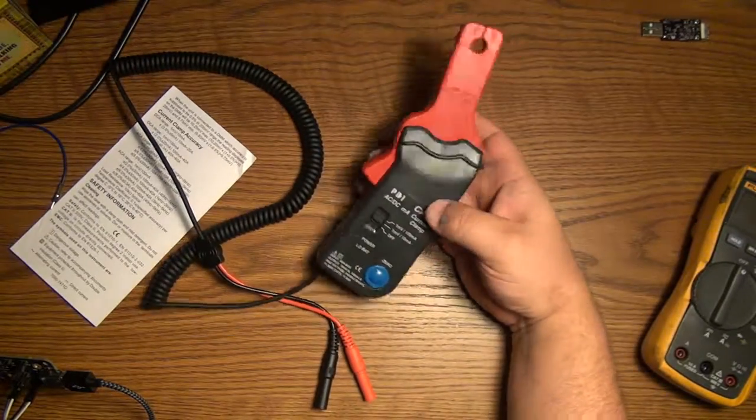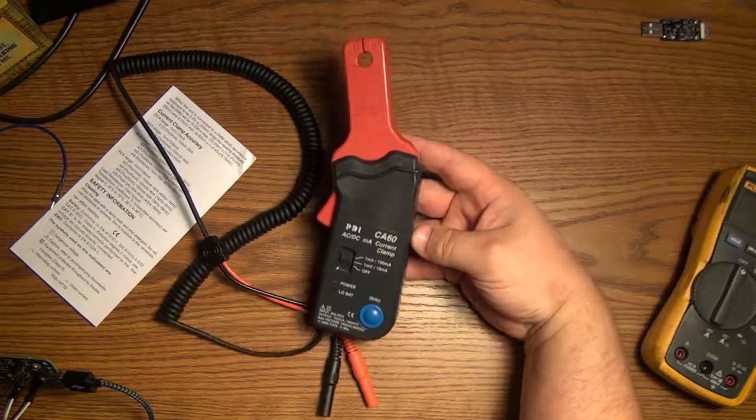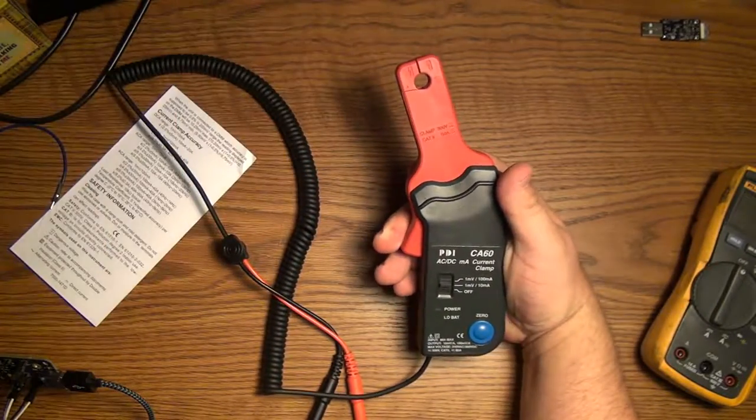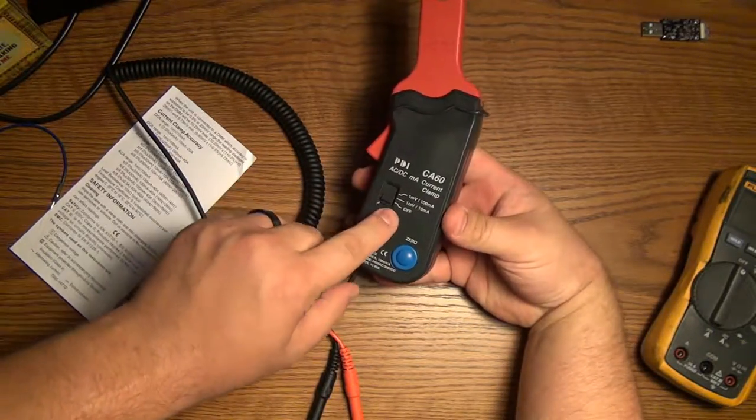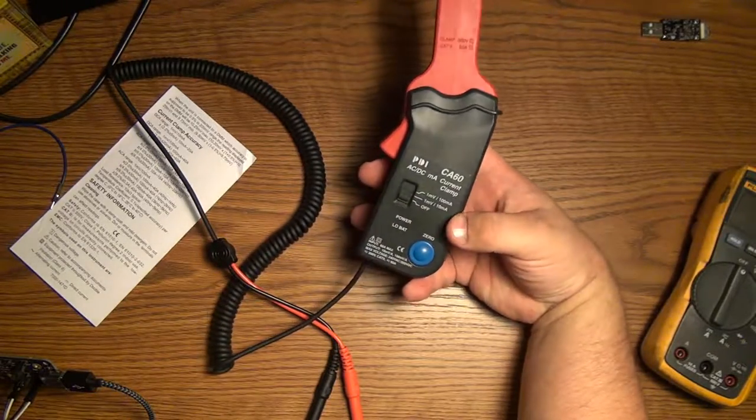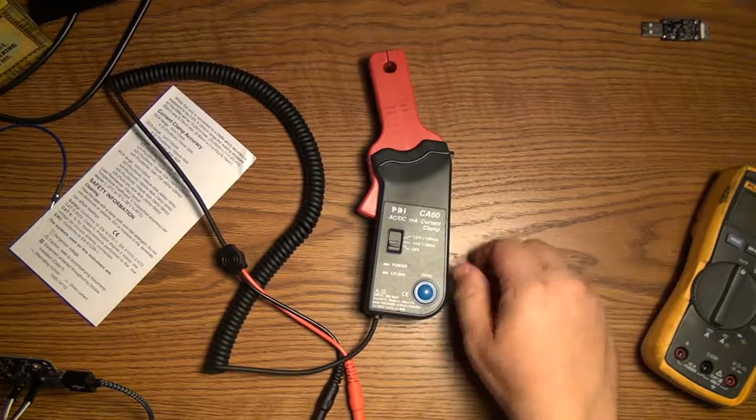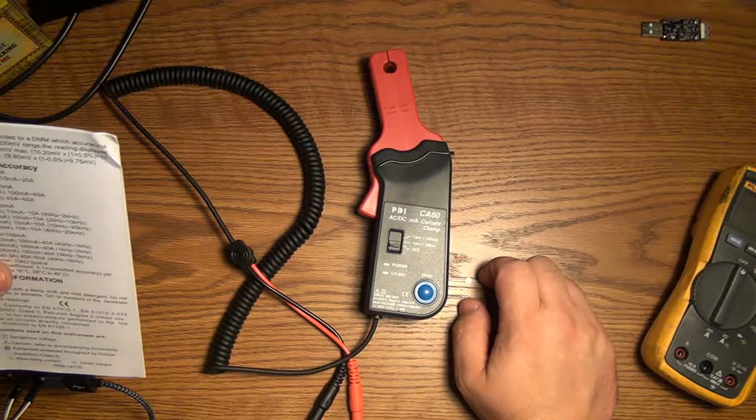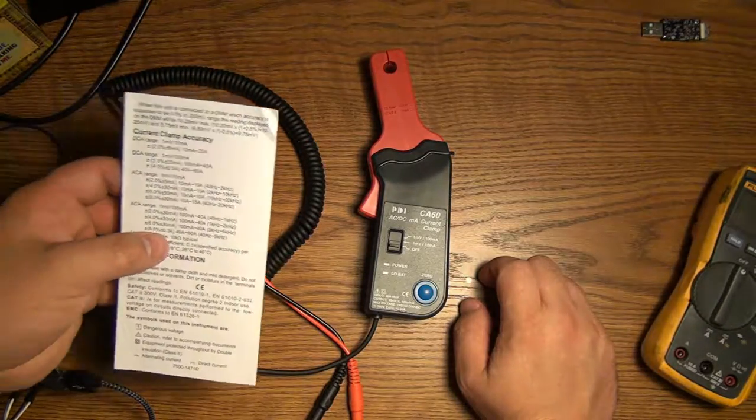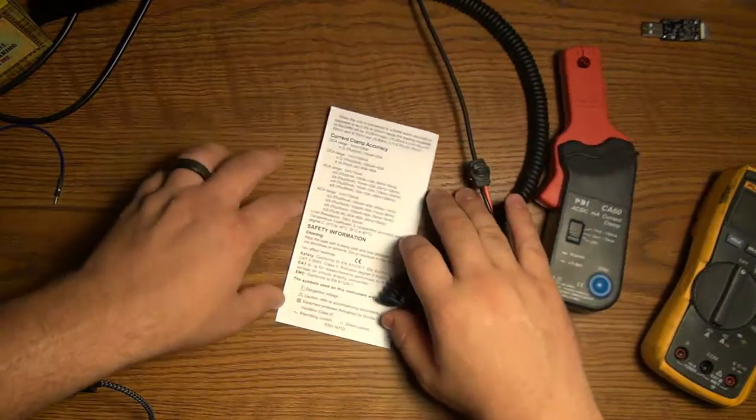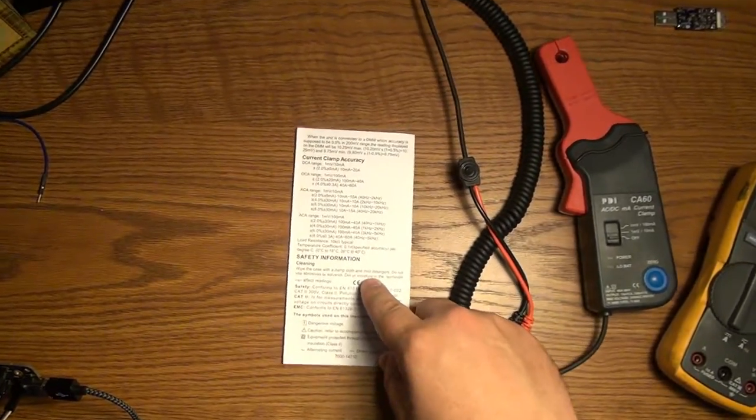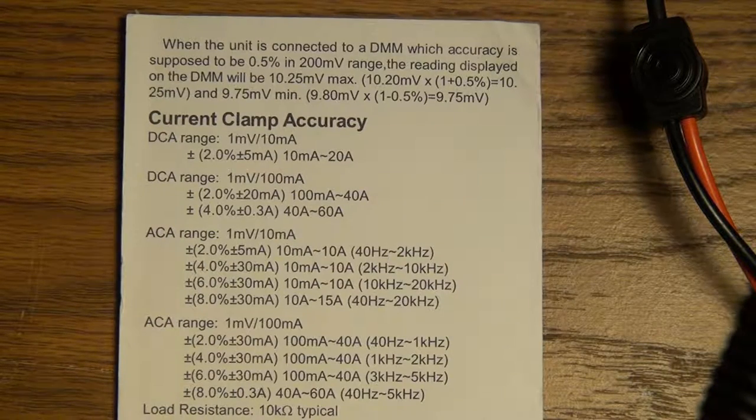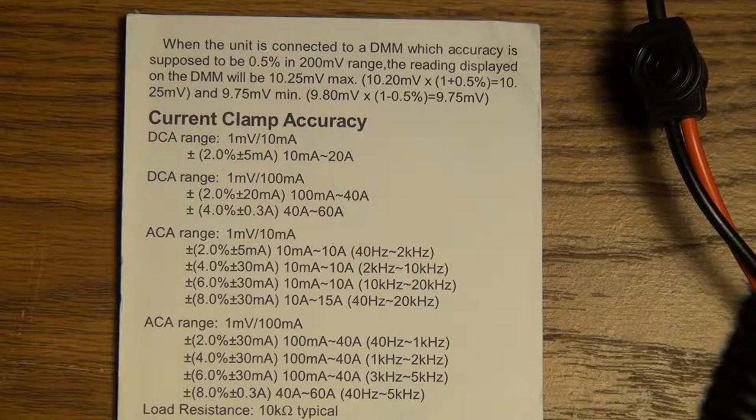Here is the PDI CA-60 AC-DC current clamp up close. It's not terribly exciting. So, you push this arm here, you put the wire through here, and I'll show you how to use it in a second. You have two ranges, one millivolt per 10 milliamps, and one millivolt per 100 milliamps. This current clamp is not terribly accurate, but then again, it's not terribly expensive either, so it's kind of you get what you pay for.